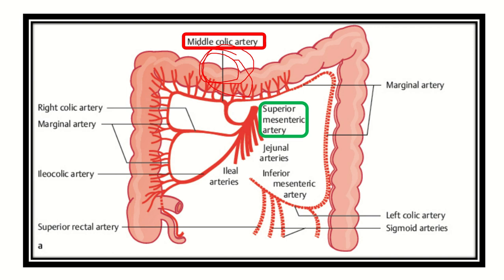The blood supply is the middle colic artery. So for limiting the spread of the tumor or for clearance, this middle colic artery should be cut and ligated. If the option middle colic artery is absent in the question, then the answer would be the superior mesenteric artery, because the middle colic artery branches from the superior mesenteric artery.